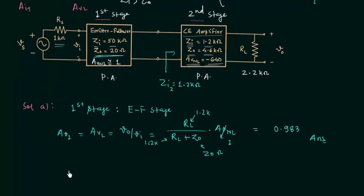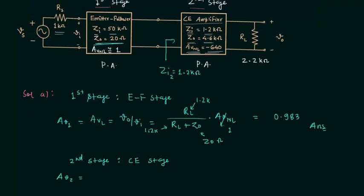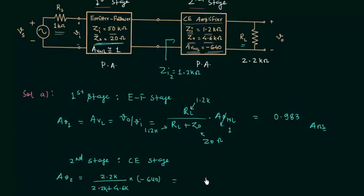Now we calculate the loaded voltage gain for the second stage — the common emitter stage — as AV2. Using the same formula: AV2 = RL / (RL + ZO) × AVNL = 2.2k / (2.2k + 4.6k) × (−640). Solving this gives AV2 = −207.05. We are done with part A.